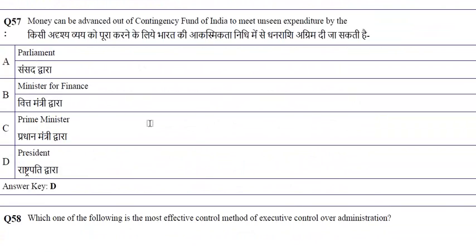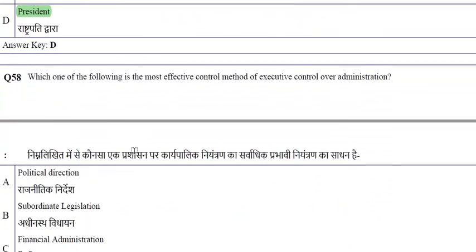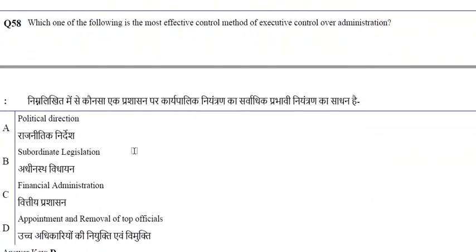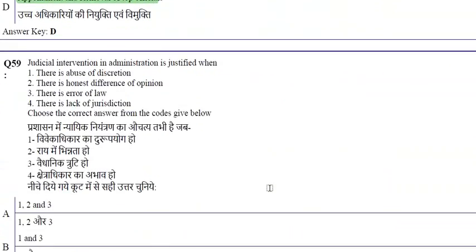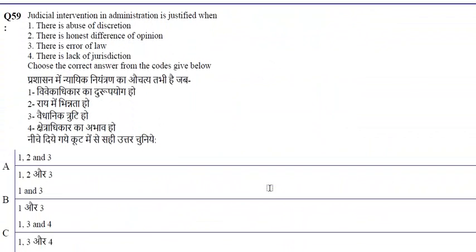Money can be advanced from the Contingency Fund of India to meet unforeseen expenditure by the President of India. The most effective method of executive control over administration is appointment and removal of top officials. Judicial intervention in administration is justified when there is abuse of discretion, error of law, or lack of jurisdiction — but not for honest difference of opinion.